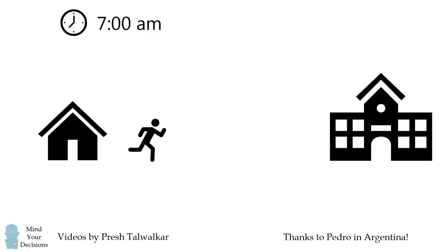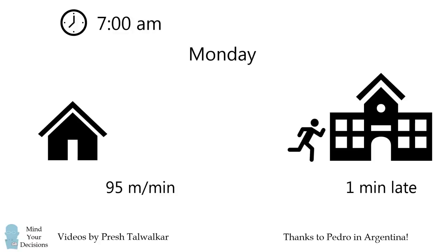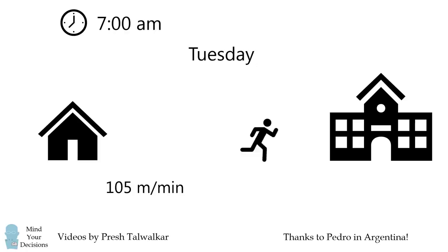Every day at 7 a.m. Pedro walks from home to school. On Monday, he walks at a rate of 95 meters per minute, and he reaches school one minute late. On Tuesday, Pedro makes the same walk at 105 meters per minute, and he reaches school one minute early.